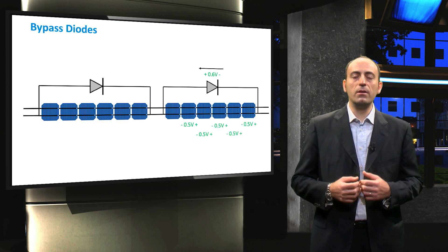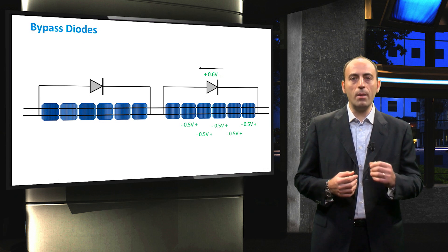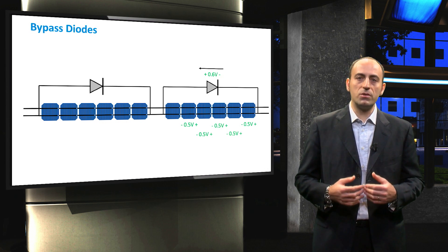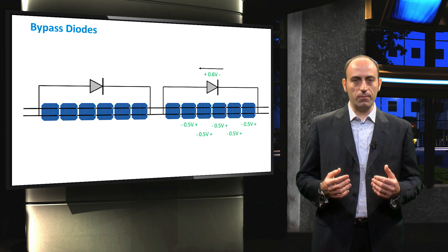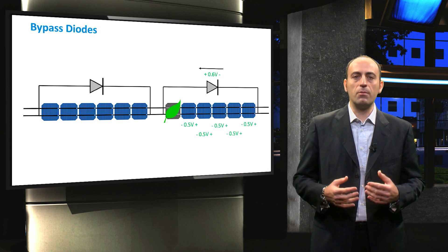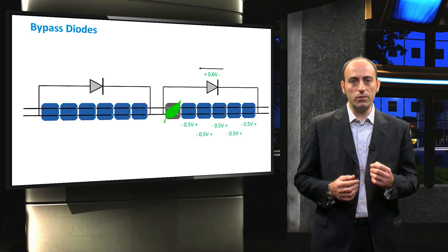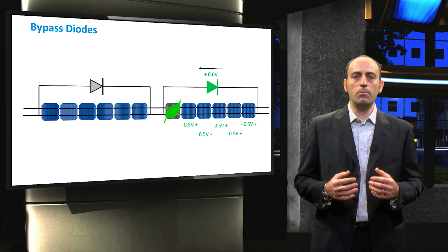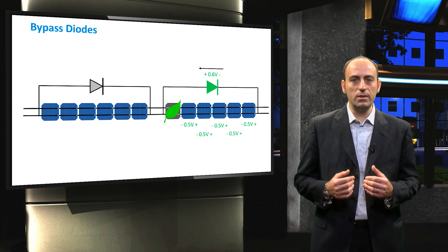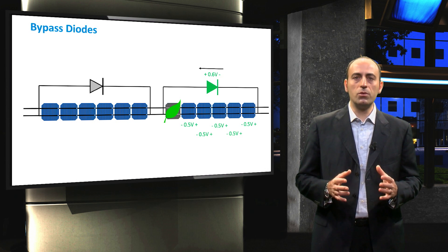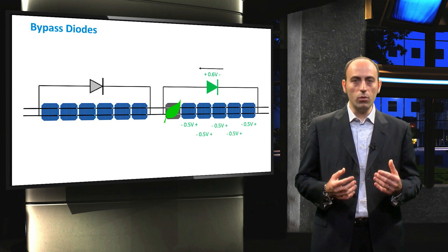In practice, however, it is not viable to use one bypass diode per cell because this solution would be too expensive. Usually, bypass diodes are placed across groups of solar cells depending on the breakdown voltage of the single cell.